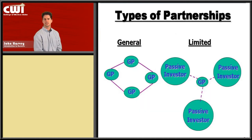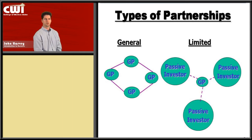Now let's look at partnerships. There are two general types. In a general partnership, all of the profits and losses are shared equally among all those involved. If I'm a general partner with somebody else and we make $100, it's probably split 50-50. If we lose $100, we're going to split that loss 50-50. A general partnership is very straightforward in terms of how to set it up and how to disassemble when you leave.